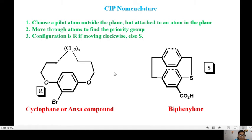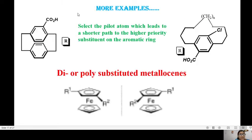This is R cyclophane. Similarly the enantiomers will be S and R. Here is another biphenylene molecule with CO2H as the substituent and both pilot atoms are carbon. We choose this as the pilot atom. From this pilot atom we move towards the CO2H in a clockwise rotation. So it is R.